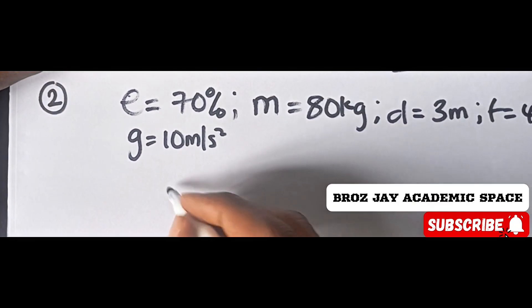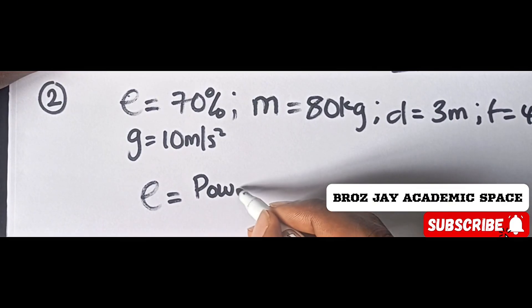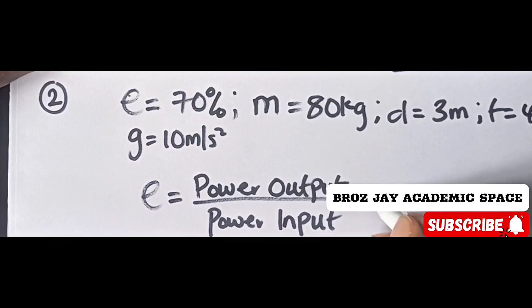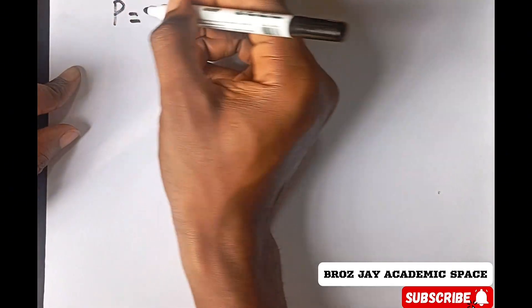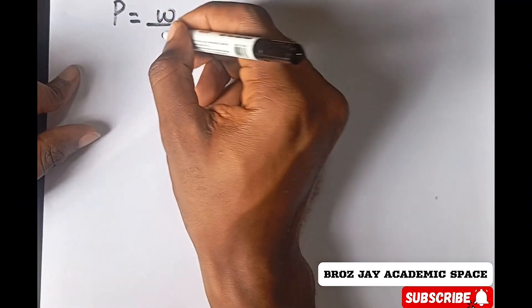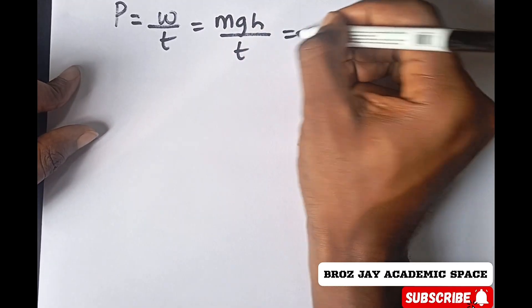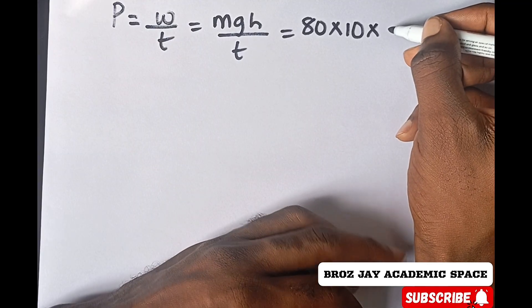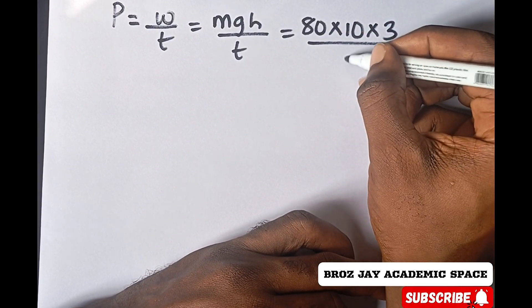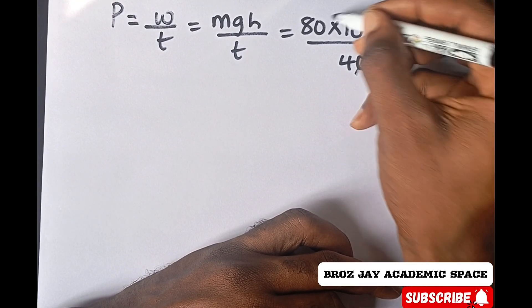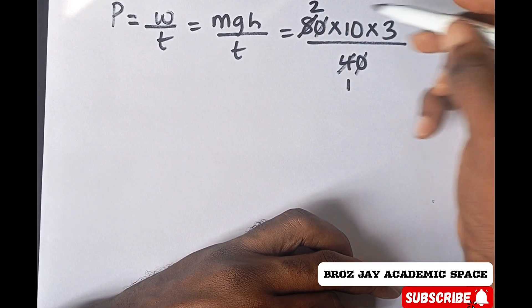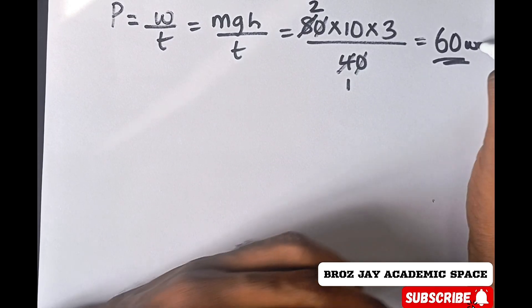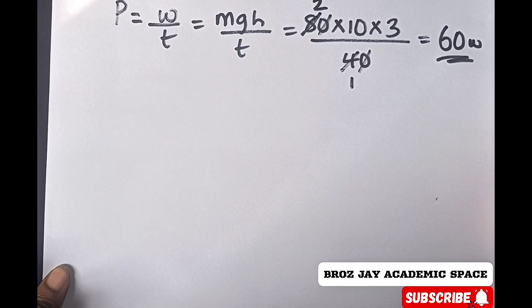To find the power input, recall that efficiency equals power output over power input times 100%. Recall that power equals work done over time, which equals mgh over t. Therefore my mass, 80, times g, 10, times vertical distance, 3, divided by time, 40, equals 60 watts. I've gotten the power output.